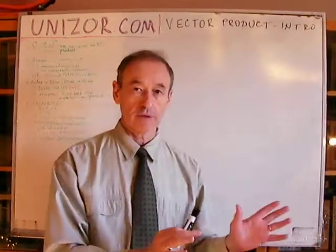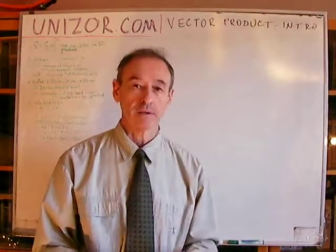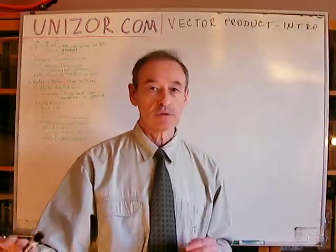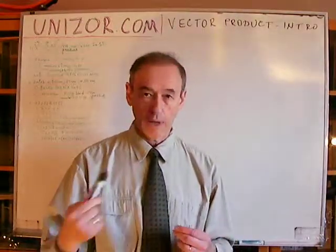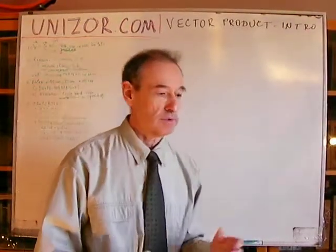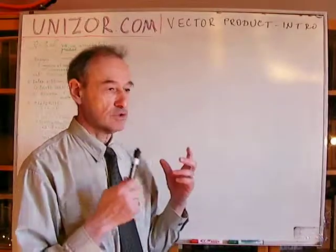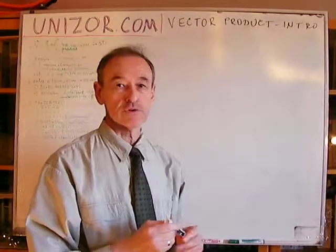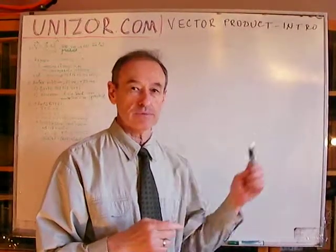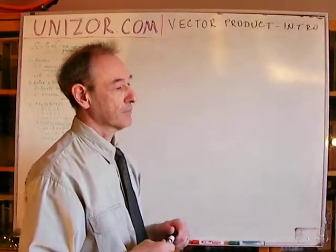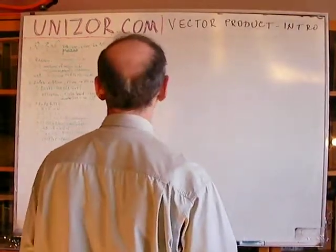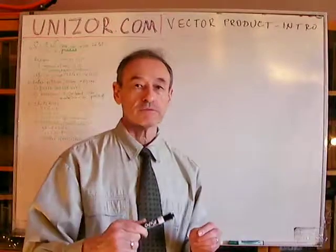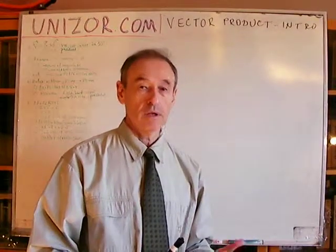Now we will talk about the vector product as a mathematical object, while always keeping in mind that there are physical foundations which this mathematical apparatus represents. When we talk about the vector product, we are talking about two three-dimensional vectors, and the operation of vector product produces a third three-dimensional vector.